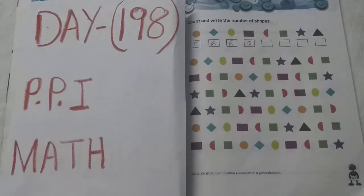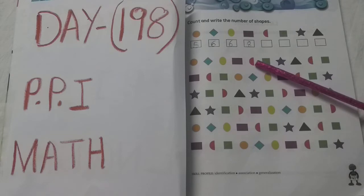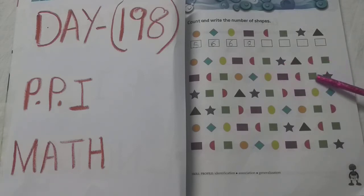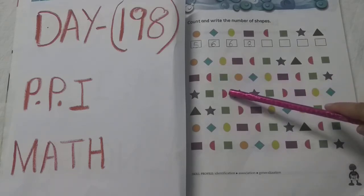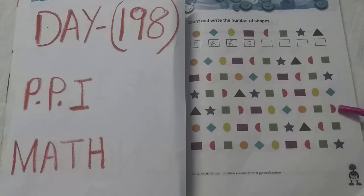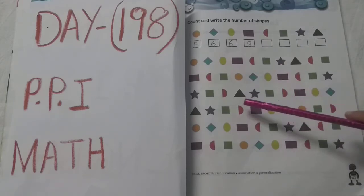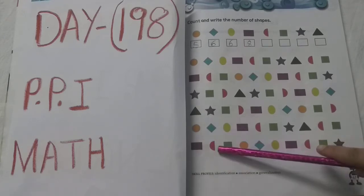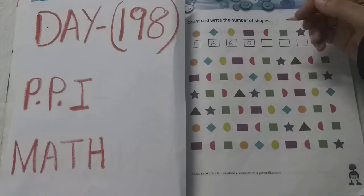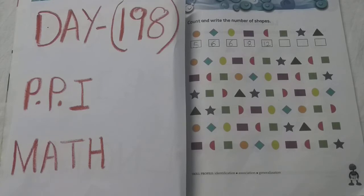Now see the next shape — semicircle. How many semicircles are there? Let's count them: one, two, three, four, five, six, seven, eight, nine, ten, eleven, twelve. How many semicircles? Twelve. Okay, see the next shape — squares.